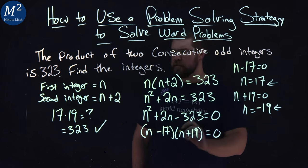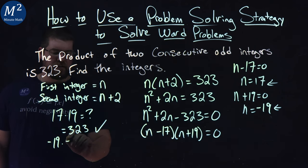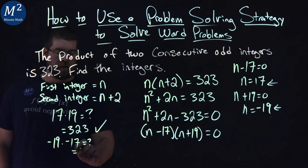So the first one is negative 19 times the next consecutive odd integer, negative 17. Negative 19 times negative 17, what does that equal? Well, a positive 323.